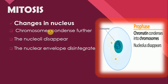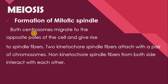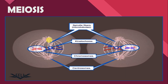Next are the changes in nucleus during Prophase 1: chromosomes condense further, the nucleolus disappears, and the nuclear envelopes disintegrate — same like the prophase of mitosis. Formation of mitotic spindle: both centrosomes migrate to the opposite poles of the cell and give rise to the spindle fibers. Two kinetochore spindle fibers attach with the pair of chromosomes, while non-kinetochore spindle fibers from both sides interact with each other.